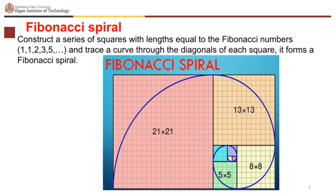This is called the Fibonacci spiral. To construct this spiral, construct a series of squares with lengths equal to the Fibonacci numbers 1, 1, 2, 3, 5, and trace a curve through the diagonals of each square to form a Fibonacci spiral.